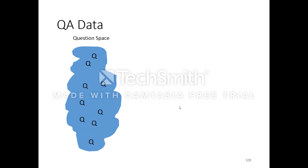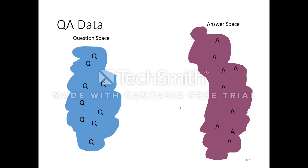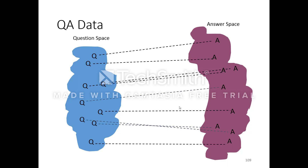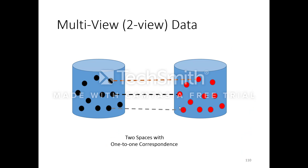Looking at QA data, you have a question space and an answer space, and there are linkages between them. This is just the illustration from part one, rotated 90 degrees. There is a one-to-one correspondence between them, which is what is usually assumed in case-based reasoning. This can be thought of as a specific kind of multi-view or two-view data.